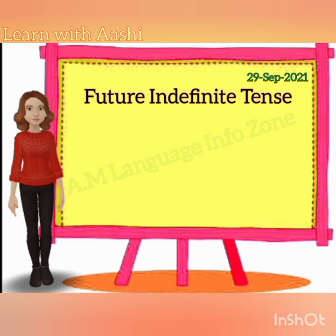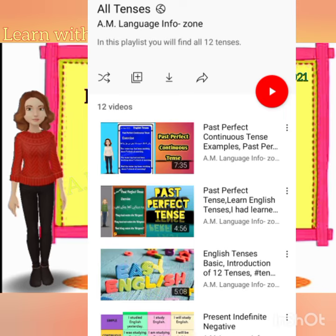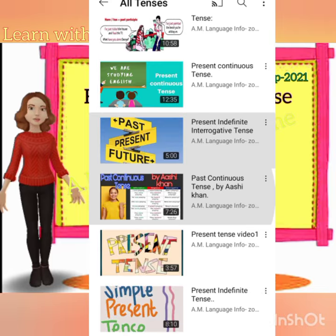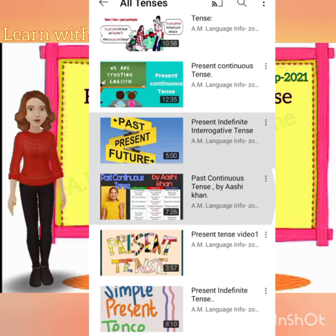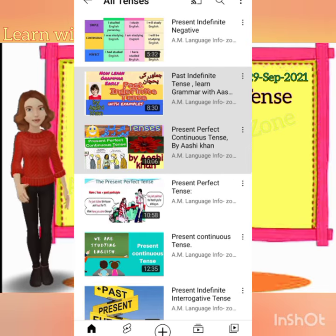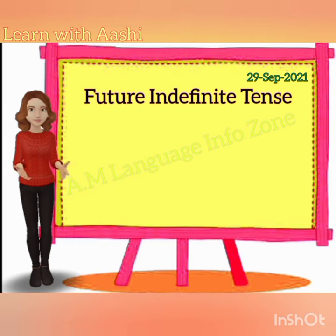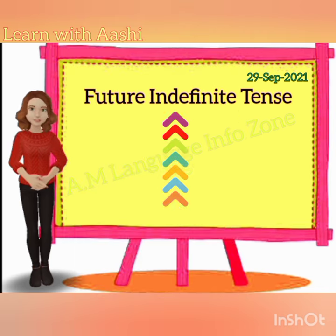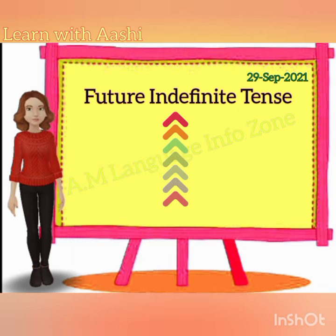In my very first lesson about tenses, I told you that there are 12 tenses in total, out of which 8 tenses we have already learned. Now it's the 9th tense. The first part of the future tense is future indefinite tense, or simple tense. So let's start now.